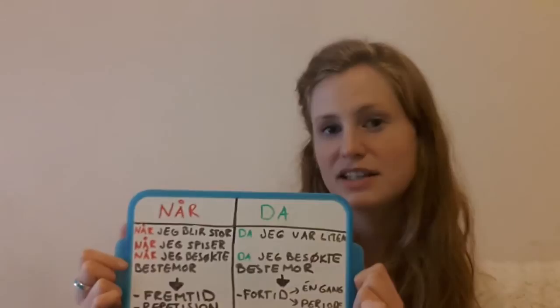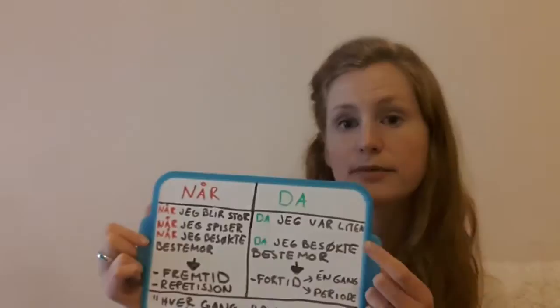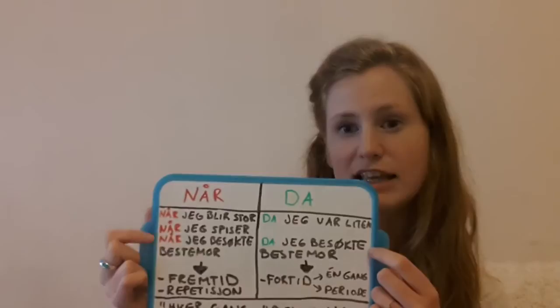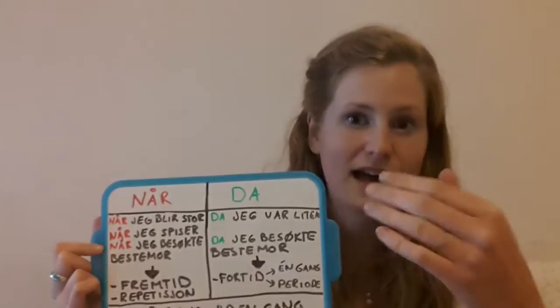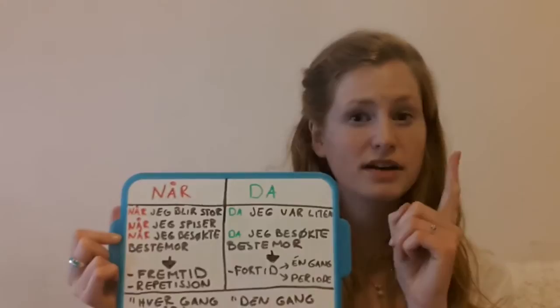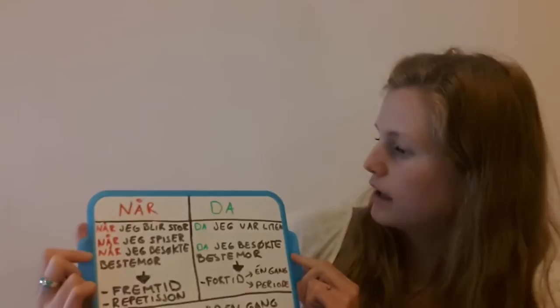'NÅR JEG BESØKTE BESTEMOR' — 'when I visited grandma'. I could have said DA instead: 'DA JEG BESØKTE BESTEMOR'. But it doesn't mean the same thing. If I say NÅR, it means every time I visited her. When I say DA, it's something that happened only once — I'm talking about one specific time.